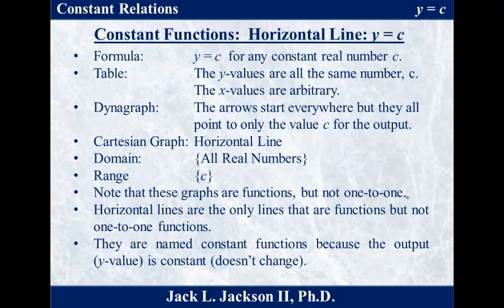Notice the domain is all real numbers, but the range is a set containing just that one number c. These graphs are functions, but they're not one-to-one — in fact, they're everything going to one. So horizontal lines are the only lines that represent functions, but not one-to-one functions. They're named constant functions because the output, the y value, is constant — in other words, the y value does not change. It remains constant.